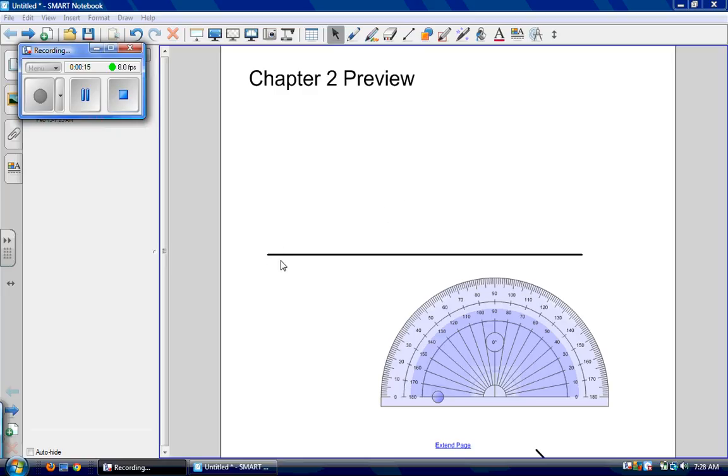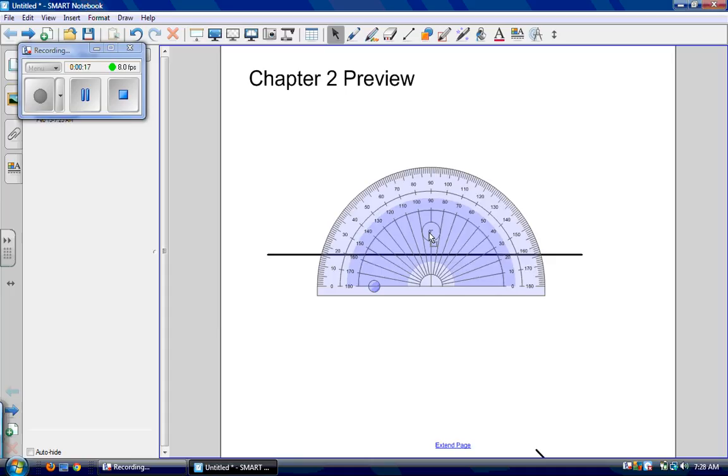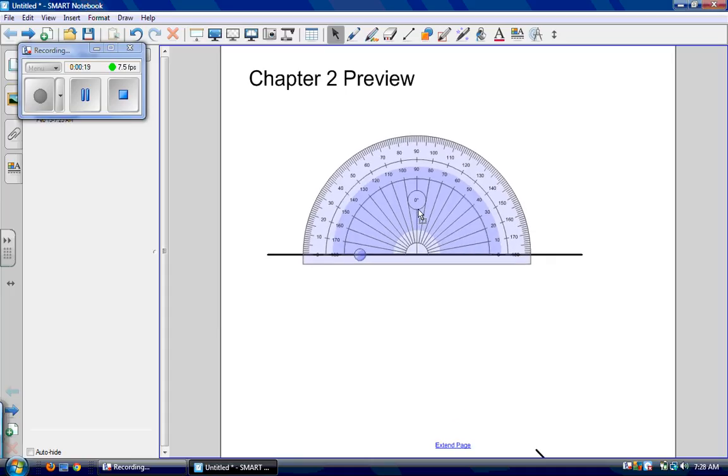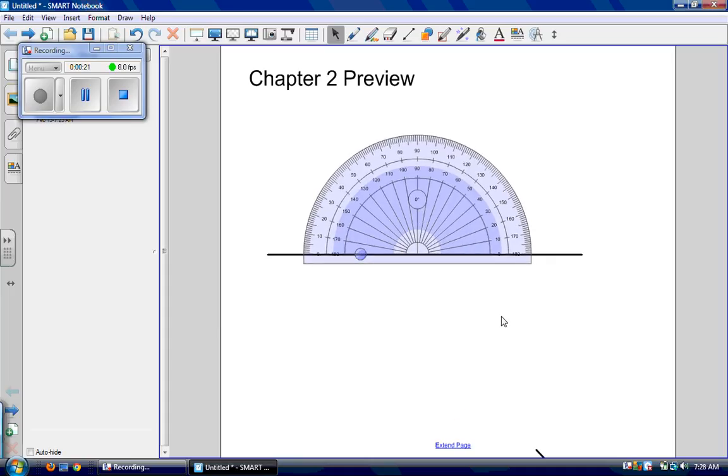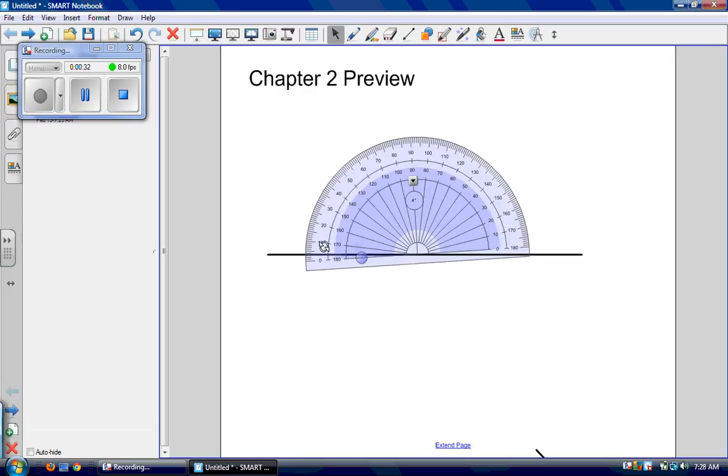So if I have a line, the measure of that line, if I put my protractor on it, is 180 degrees. Now remember, to measure with a protractor, we place our T on a point and we're going to measure counterclockwise. So this is 0 all the way to 180 degrees.